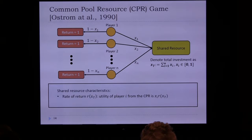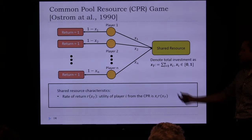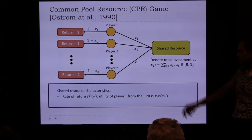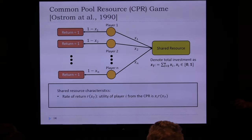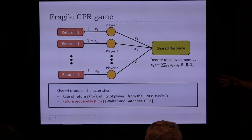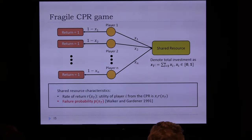Player i invests x_i in the shared resource; total investment is x_T. The shared resource has rate of return R(x_T), so player i gets x_i times R(x_T). To capture fragility, we introduce a probability of failure P(x_T), which increases with total utilization. If the resource fails, players receive no return and lose whatever investment they made.